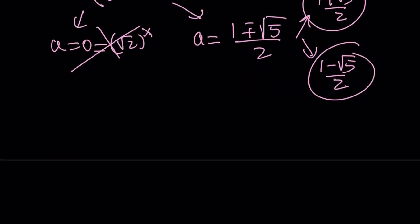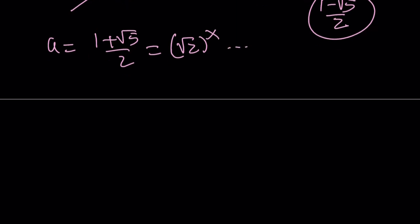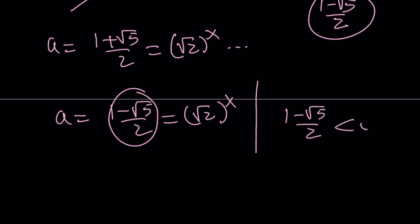So if a is equal to 1 plus root 5 over 2, that means it's equal to square root of 2 to the power of x. So we're going to get some solutions from here. But let's go ahead and take a look at the second one. That is 1 minus root 5 over 2. And if this is the case, then we have a problem. Because 1 minus root 5 over 2 is less than 0. And square root of 2, any power of square root of 2 cannot be negative.